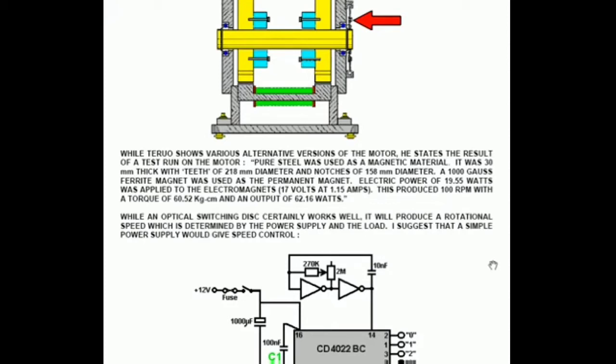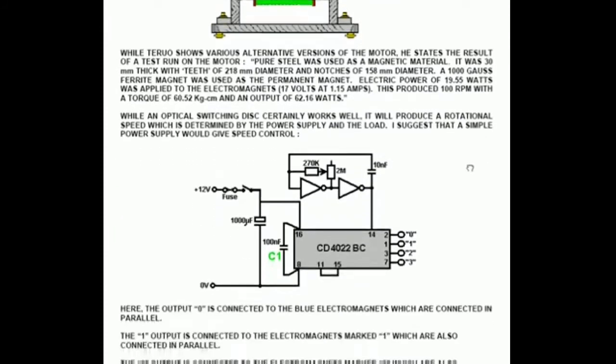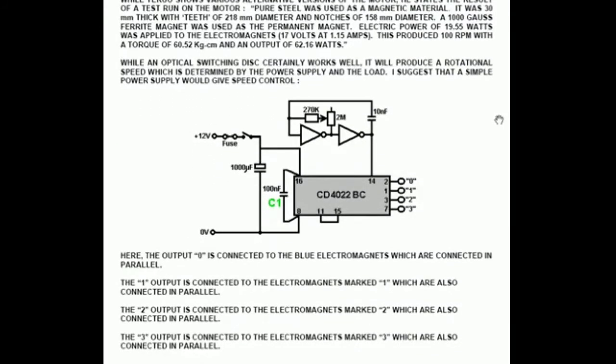While Terry suggests doing it that particular way I would suggest perhaps that you might use a rotational speed which is determined by the power supply and an adjustable electronic circuit. A simple power supply would allow you to give speed control. The speed control is adjusted by the variable resistor here which is 2 mega ohms.